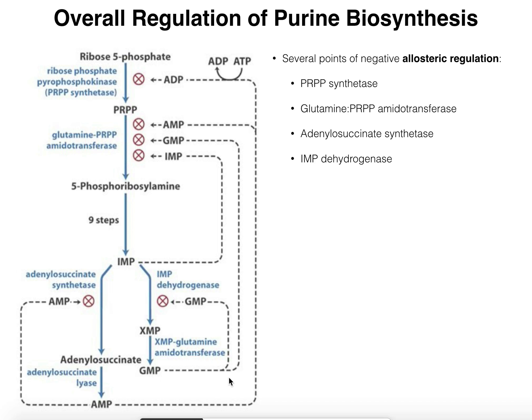With each successive inhibitor that binds, you get more and more inactivation. If just AMP binds, you have partial inactivation. If AMP and GMP both bind, you have a little more. But if all three — AMP, GMP, and IMP — bind, the enzyme is completely shut off. Having three allosteric regulators, all acting negatively on glutamine PRPP amidotransferase, allows modulation of activity in increments, depending on how much enzyme activity is actually needed.